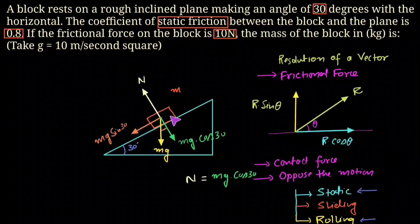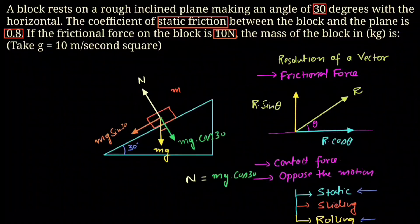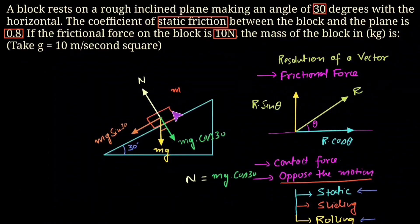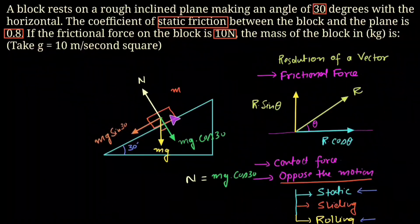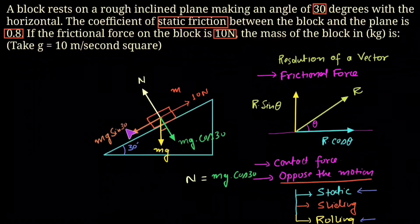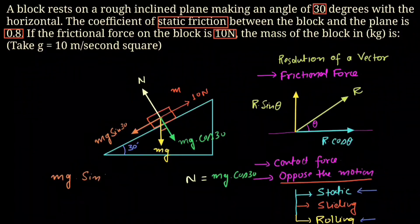Only mg sin theta acts in the forward direction along the incline, so the block will try to move in that direction. But as given in the question, the block is not moving — it is at rest — and there is a frictional force of 10 Newton. Since the frictional force always opposes motion, it acts opposite to mg sin theta in the backward direction. Since the body is still at rest, this 10 Newton equals mg sin theta, making the net force zero.